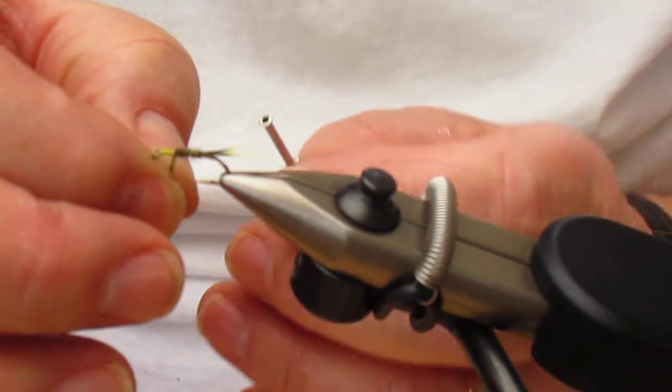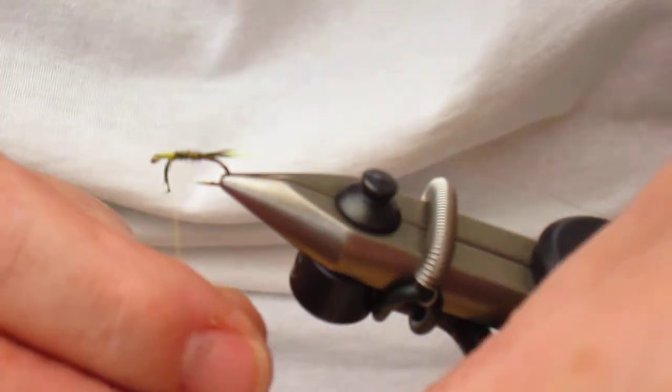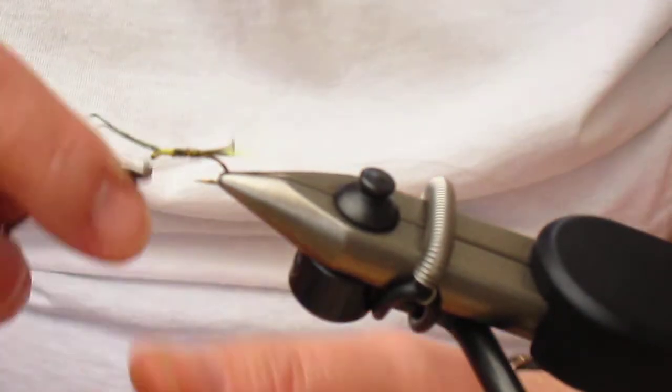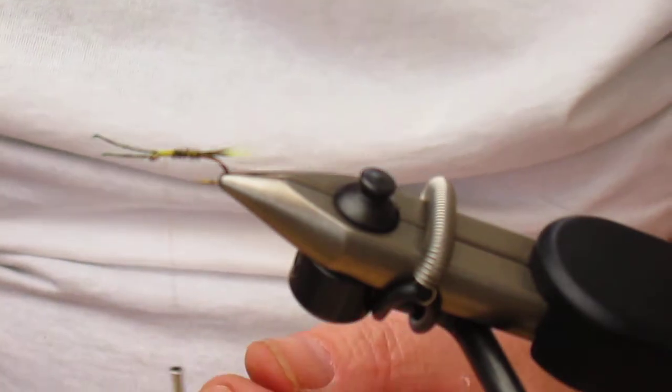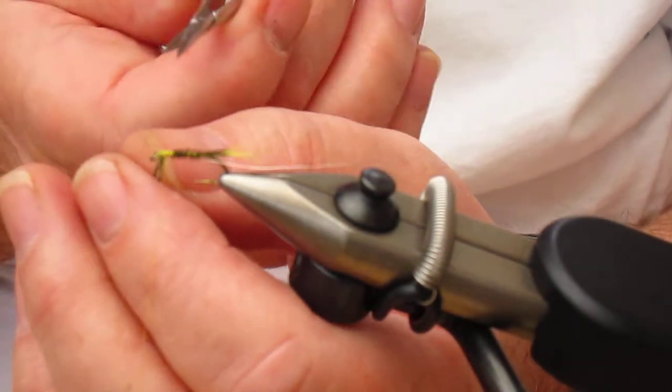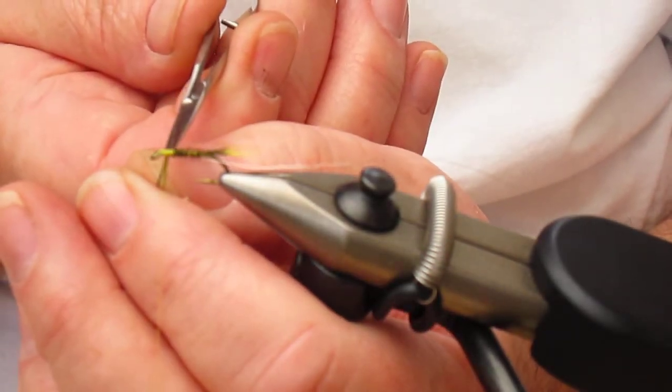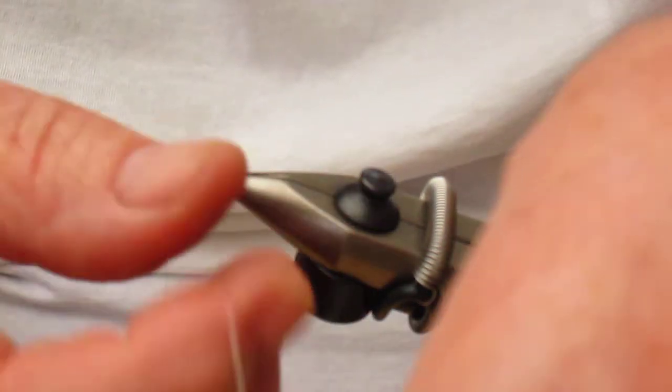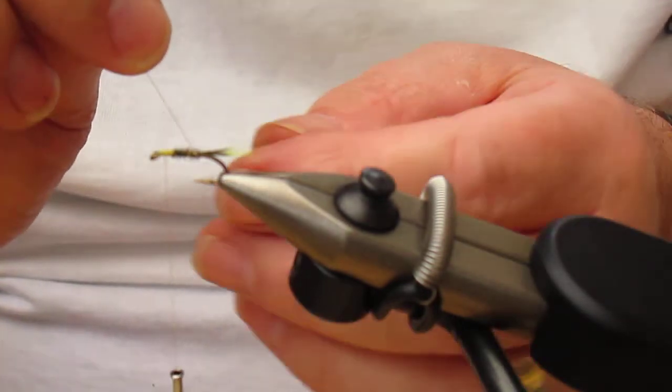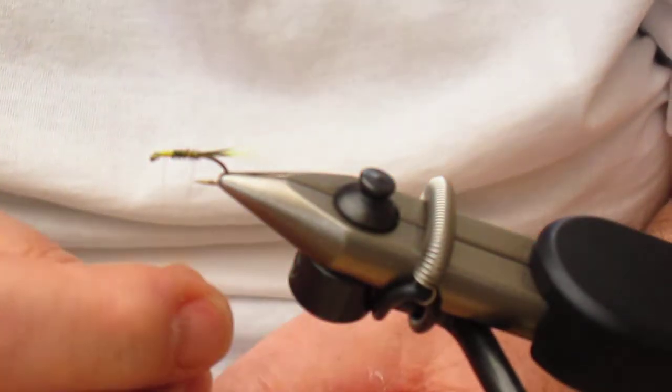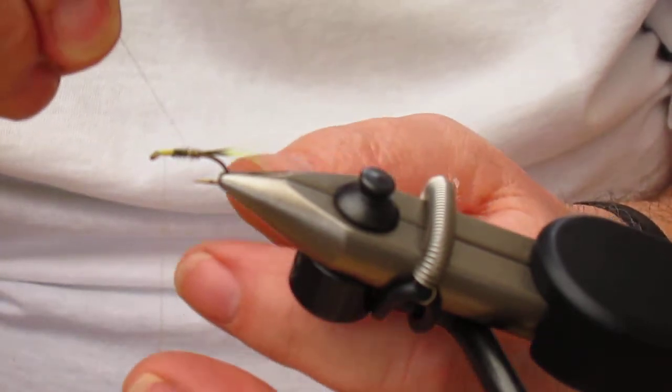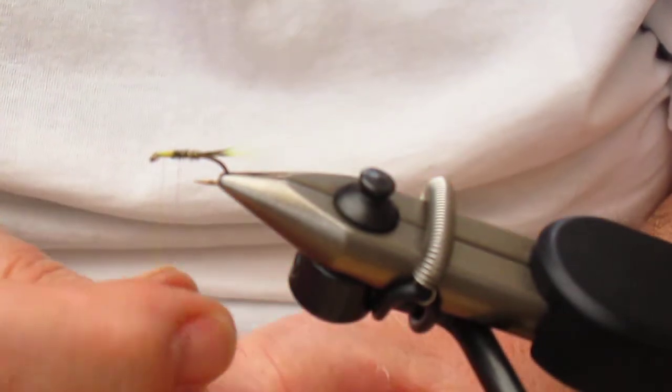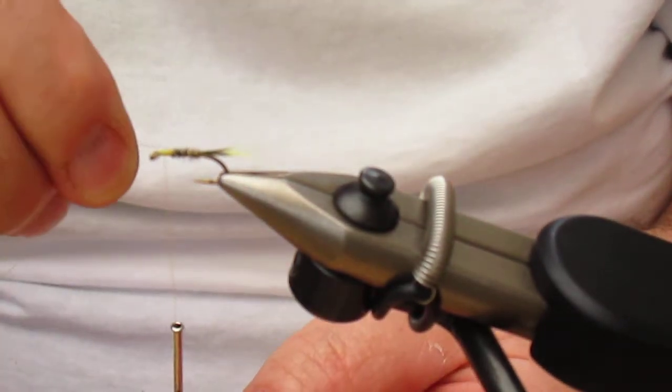Now tie that off. I'm conscious of keeping my hands out of the way so you can actually see what I'm doing here. Snip the waste off. Now the silver wire is going to come over the top in open turns to protect the pheasant tail, and you don't want too much of this. Four is ample.